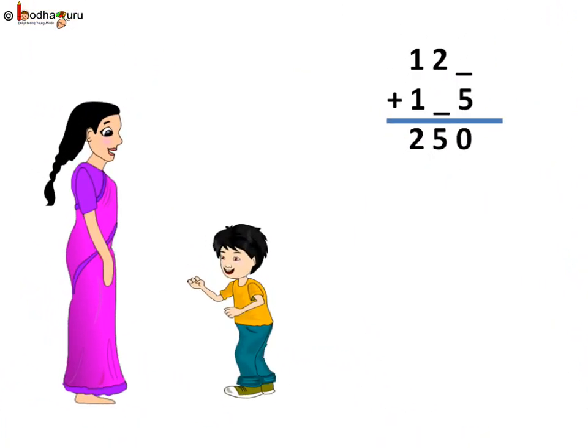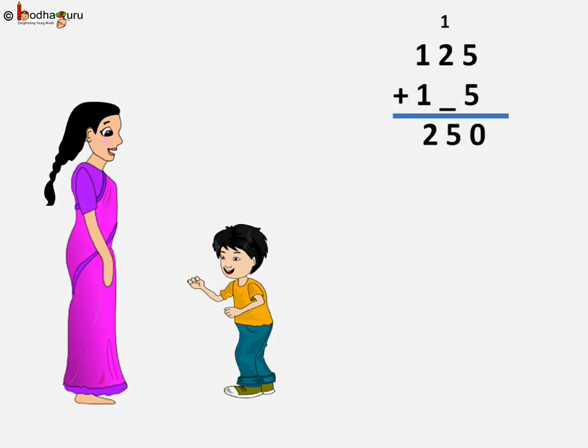Can you guess the missing digits in this problem? The last digit of the sum required is 0. The only way we can get 0 in the sum is after adding something to 5 that will make it 10. We know 5 plus 5 is 10, so the missing digit after 2 is 5. 5 plus 5 is equal to 10.